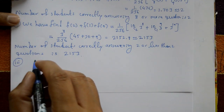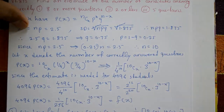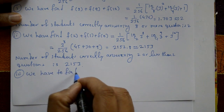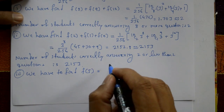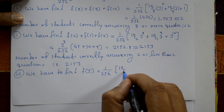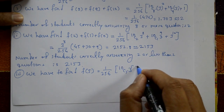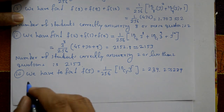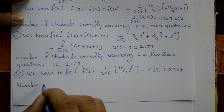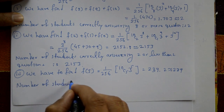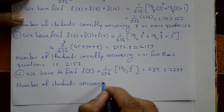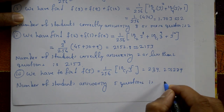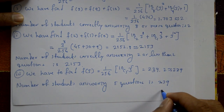Case 3: exactly five questions. f(5) = (1/256) × 10C5 × 3^5 = 239.2 ≈ 239. Therefore, approximately 239 students answered exactly five questions correctly. This completes the required solution.